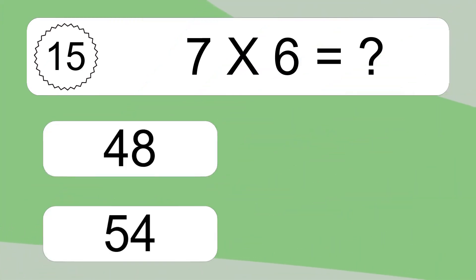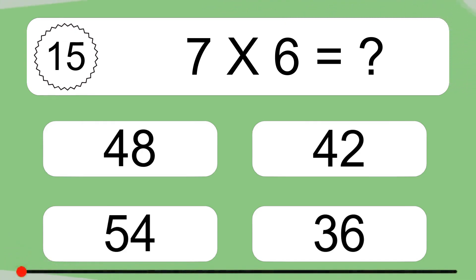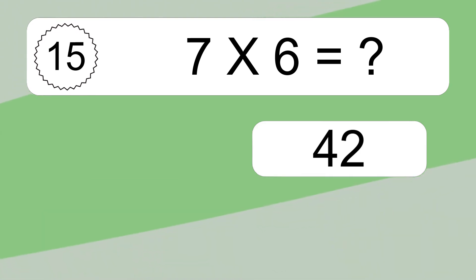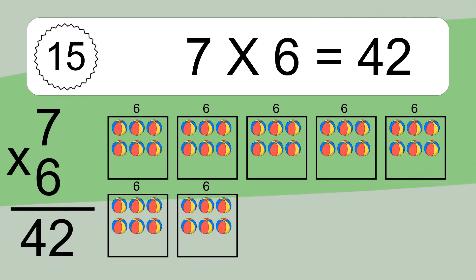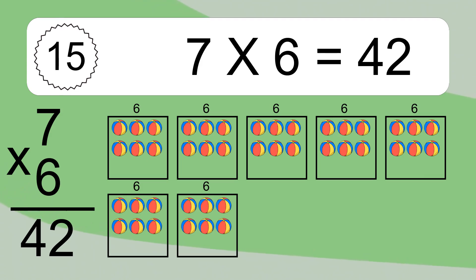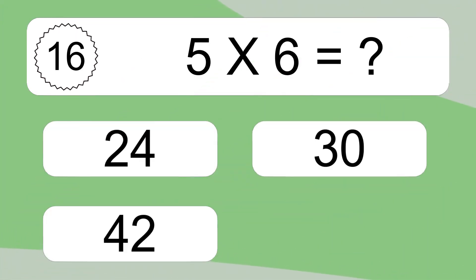7 times 6 equals what? 7 times 6 equals 42. We have 7 boxes, and each box has 6 colorful balls inside. If you count all the balls in all the boxes together, you will have 7 times 6 balls. This equals 42 balls.